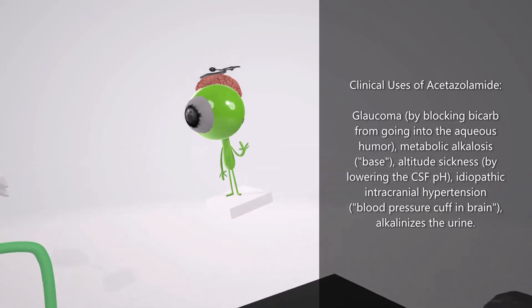This martian is standing on this baseball base to help us remember base or alkalosis. Acetazolamide and other carbonic anhydrase inhibitors can be used to treat metabolic alkalosis because they get bicarb into the urine. Although we want to mention that these carbonic anhydrase inhibitors are actually weaker than other diuretics, so they're really only used in a case of alkalosis as a diuretic.